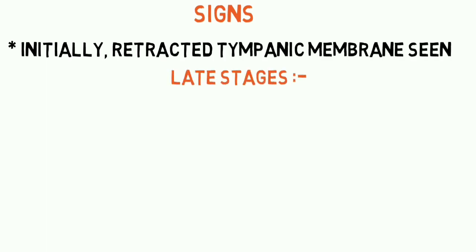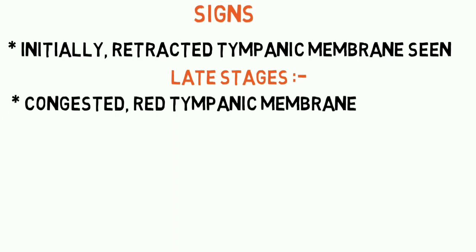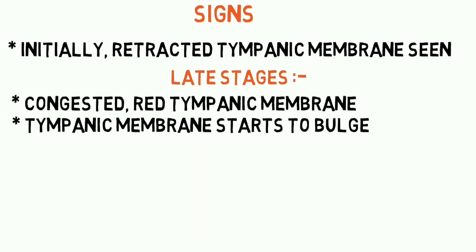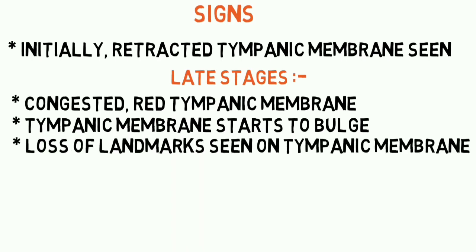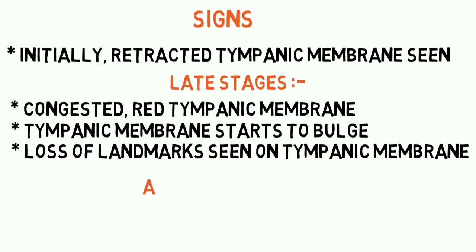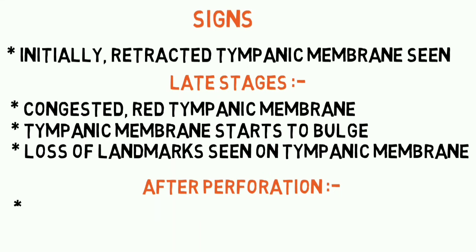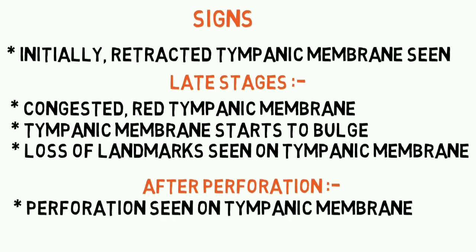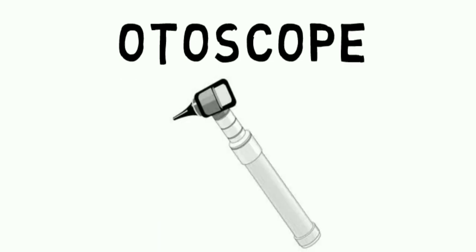What are the signs of ASOM? Initially, the tympanic membrane appears retracted on otoscopy. In the late stages, the tympanic membrane appears red and congested and starts to bulge out, and the landmarks usually seen on the tympanic membrane start to disappear. After perforation, you can see a central perforation of the tympanic membrane. Otoscopy is really useful in the diagnosis of ASOM.